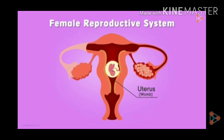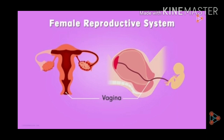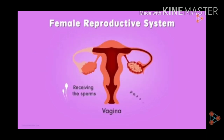In this uterus, after nine months, when the fetus develops, it comes out from the uterus through the part called vagina. This vagina is the part of the female reproductive system from where sperm enter into the female and then fertilization with the egg occurs. This vagina is the part which receives the sperm and also removes the fetus.